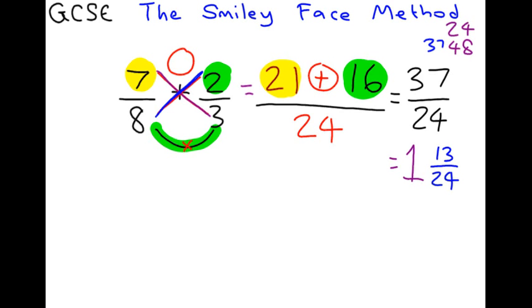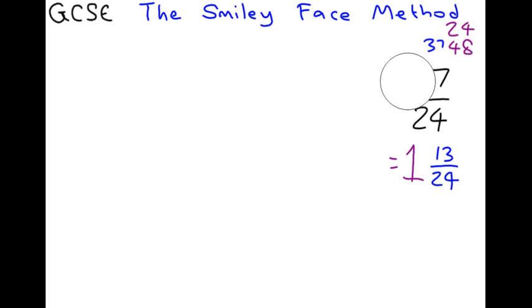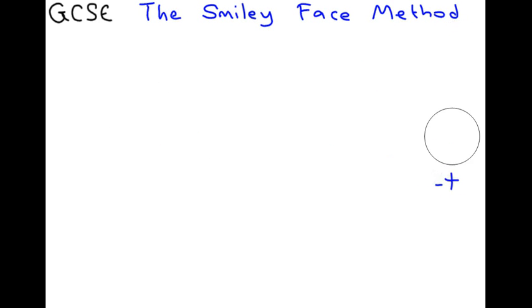Hope that one makes sense. Let's have a look at another fraction. Let's try to take away this time and see what happens here. So, let's have a go at 9 over 10, take away 2 over 3. So, we do our smiley face. Draw it on.